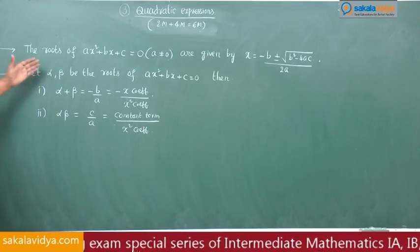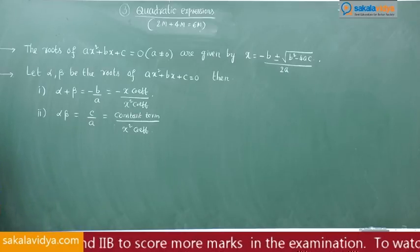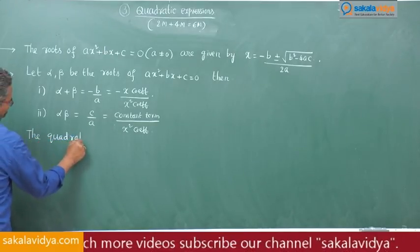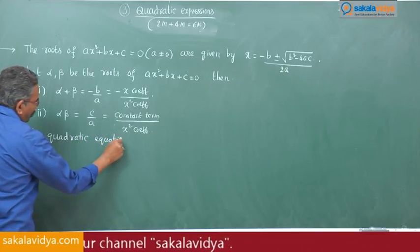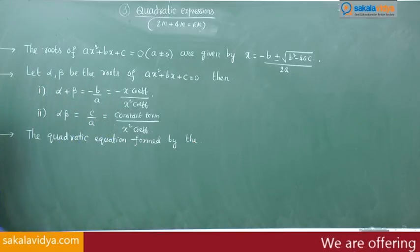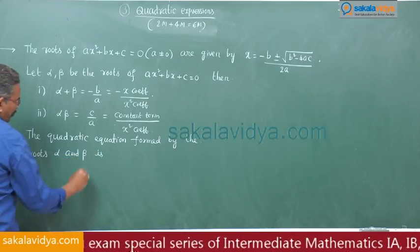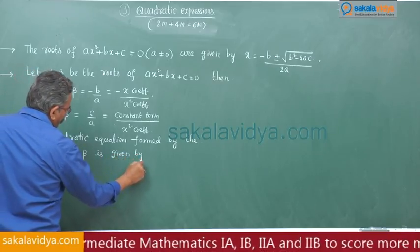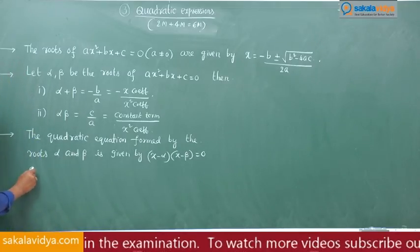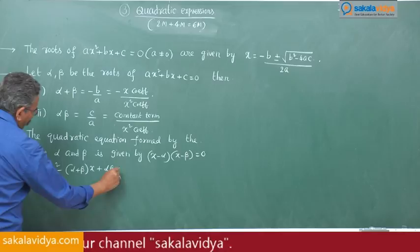If alpha and beta roots are given, we can frame a quadratic equation in terms of x or any other variable. The quadratic equation formed by the roots alpha and beta is given by (x − alpha)(x − beta) = 0, or simply: x² − (alpha + beta)x + alpha·beta = 0.